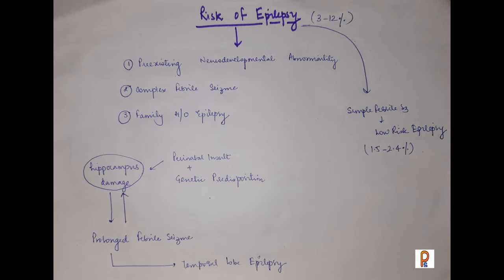The question comes about how many febrile seizures lead to epilepsy. For simple febrile seizures, the risk of epilepsy is very low — about 1.5 to 2.4%. Overall the risk is 3 to 12%. Higher risk is seen with pre-existing neurodevelopmental abnormality, complex febrile seizures, or a family history of epilepsy.